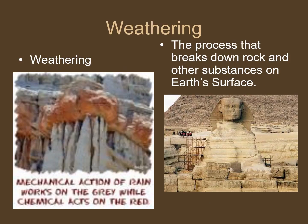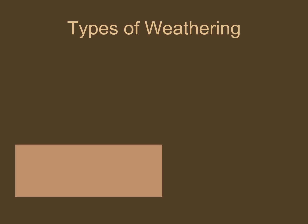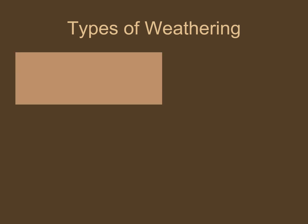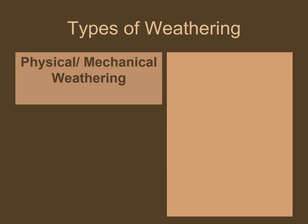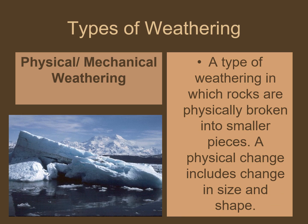Weathering is the process that breaks down rocks and other substances on the earth's surface. There are two important types of weathering: physical and chemical weathering. Physical weathering, also called mechanical weathering, is a type of weathering in which rocks are physically broken into smaller pieces. A physical change includes change in size and shape. It refers to the geological process of rocks breaking apart without changing their chemical composition.